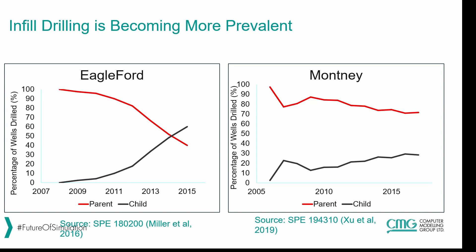Let's start with the definition of the term frack hit. Frack hits are caused by pressure sinks which occur around parent wells. Once you deplete a parent well for a period of time and then frack the child well, the child well fractures will grow towards areas where there's a higher chance of shear failure — near existing parent wells that have already been depleted. As you can see with these images, the number of child wells is increasing significantly, especially in the Eagleford, where child wells have actually overtaken parent wells being drilled, and similarly in the Montney there's been a hundred percent increase from the early 2000s to 2017-2018.